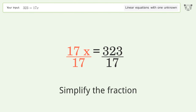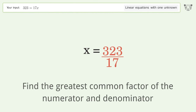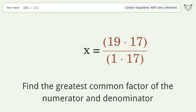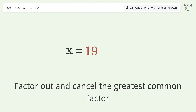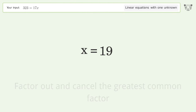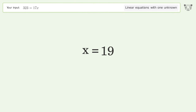Simplify the fraction by finding the greatest common factor of the numerator and denominator. Factor out and cancel the greatest common factor. And so the final result is x equals 19.